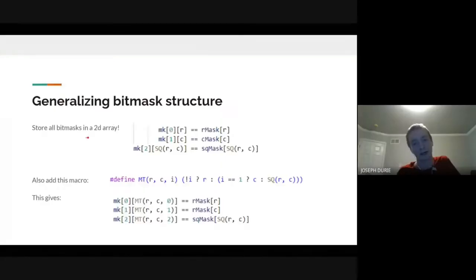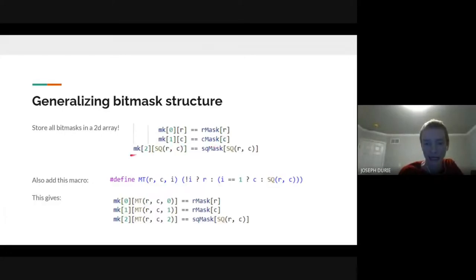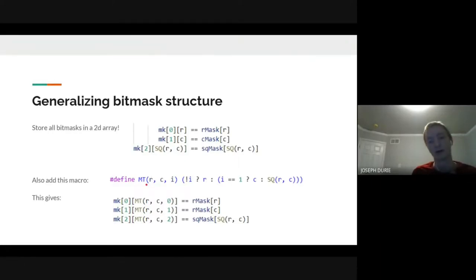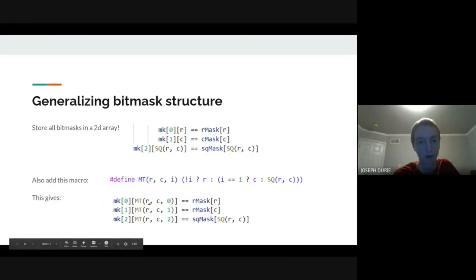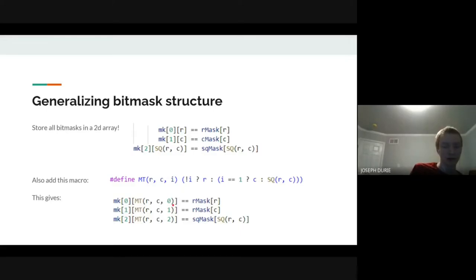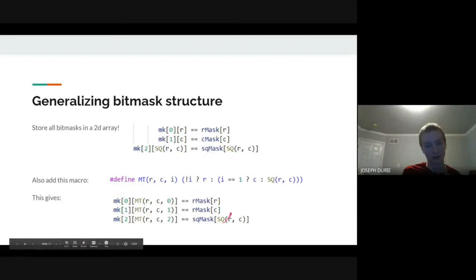To generalize the bitmask handling, instead of three separate arrays (row mask, column mask, square mask), we use a single 2D array: mask[0][r] is the row mask, mask[1][c] is the column mask, mask[2][sq(r,c)] is the box mask. We also define a macro mt(r,c,i) that returns the appropriate index for the i-th mask type at position (r,c)—so mt(r,c,0)=r, mt(r,c,1)=c, mt(r,c,2)=sq(r,c).